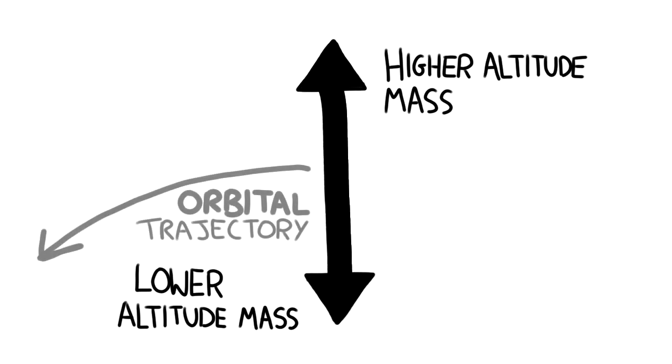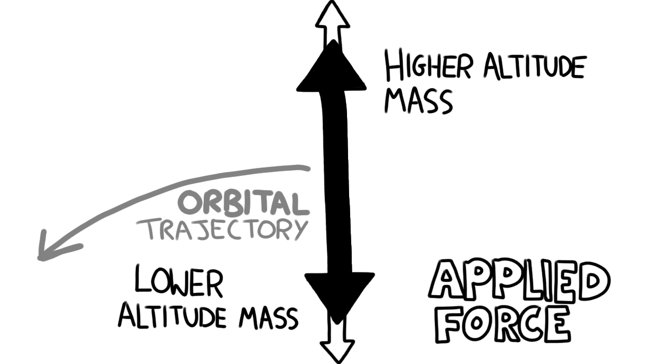Less velocity is required at a higher altitude to maintain orbit and more is required at lower altitudes. Therefore, the mass at higher altitudes has more velocity than required to follow the orbit of this spacecraft and will try to move out to an even higher altitude, applying force to the object.